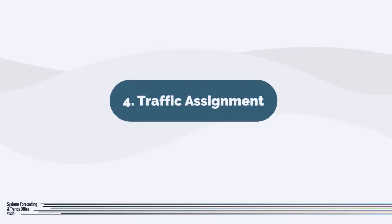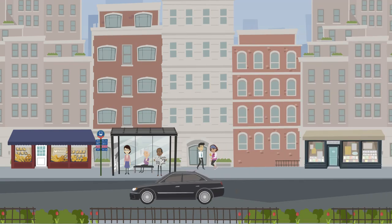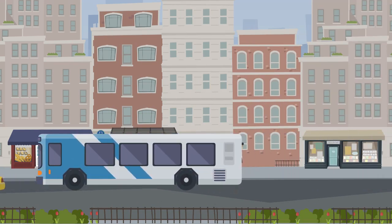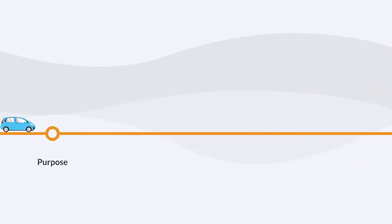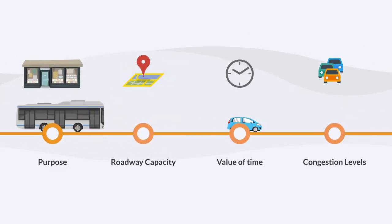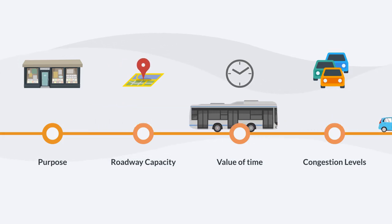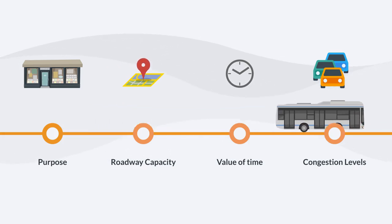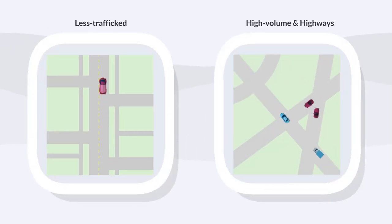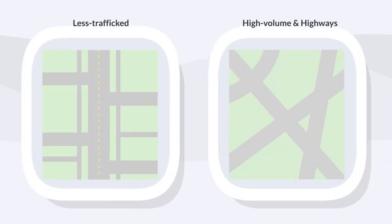The final step is traffic assignment, predicting the route of vehicle or other mode of trips across the transportation network. It considers the trip's starting point, purpose, roadway capacity, travelers' value of time, and congestion levels to determine the most efficient routes. Shorter trips tend to use less trafficked streets, while longer trips tend to use higher volume roads and highways.